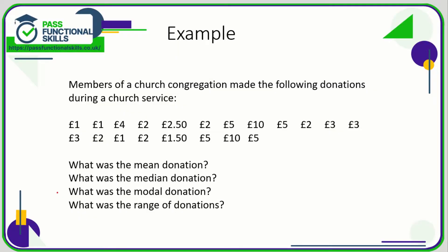Let's take a look at an example of means, medians, and modes. We've been told that members of a church congregation made donations during a church service. The mean is going to be all of these values added up — that comes to 70 — and in total there are 20 values, so we need to divide 70 pounds by 20, which is £3.50.